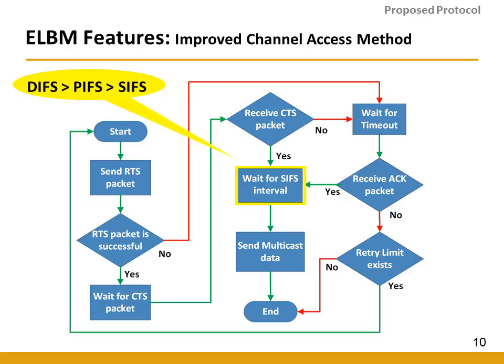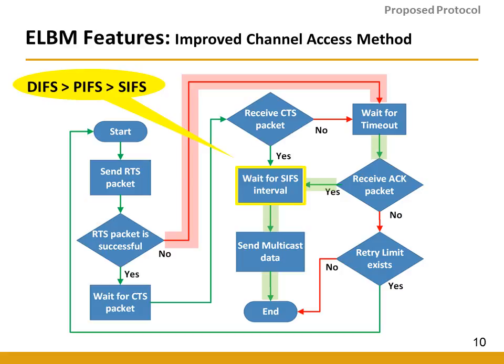The second feature is an improved channel access mechanism. After sending the RTS, the group owner waits for the CTSR acknowledgement and then sends multicast data after waiting for CIFS. This ensures the group owner gets channel access first, because the AP waits for PIFS and other unicast stations wait for DIFS — both greater than CIFS. If RTS is successful, the green flow is followed; if not, the red flow is followed, and ELBM accommodates the RTS failure accordingly.